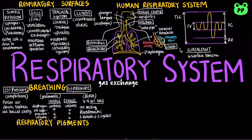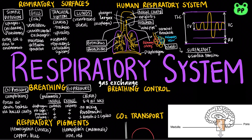Respiratory pigments are proteins that transport oxygen. Insects have hemocyanin with copper as the oxygen-binding component. Mammals have hemoglobin with iron as the oxygen-binding component, contained within the red blood cells.